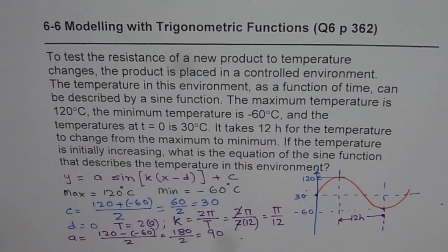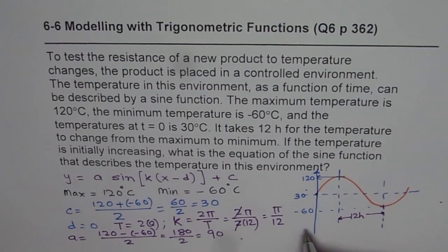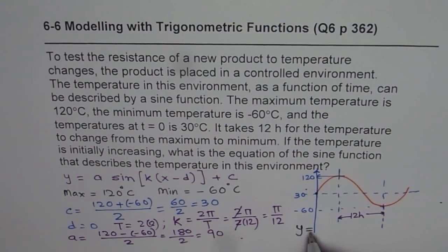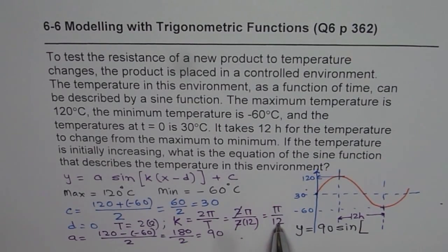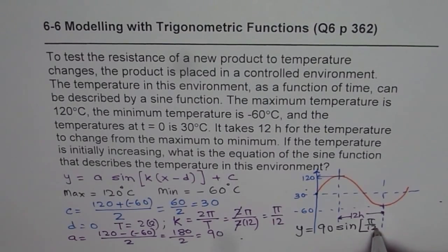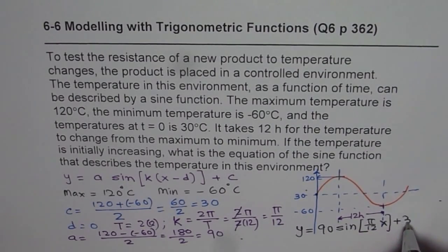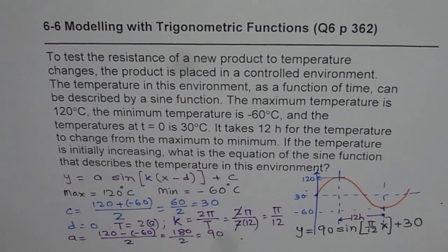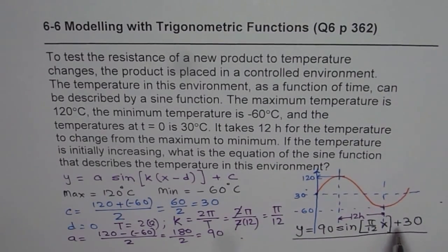Knowing all these values, we can write down the equation for the function, which is going to be y equals 90 sine of π by 12 times x, and d is 0, and c is 30, plus 30. This sine function represents or describes the temperature in this environment. That becomes the answer for the given situation.